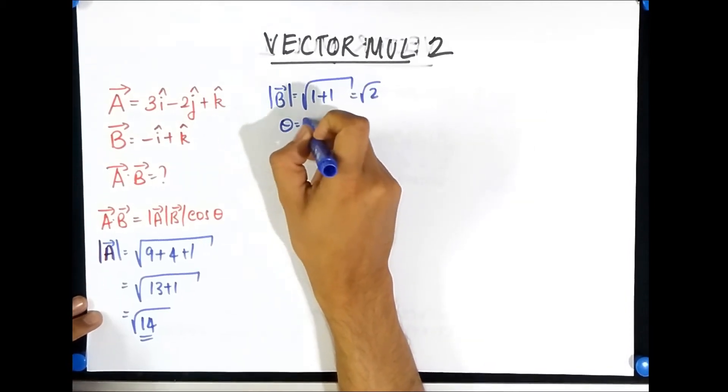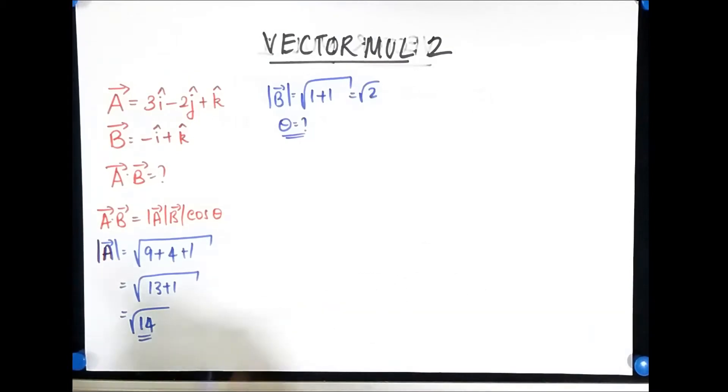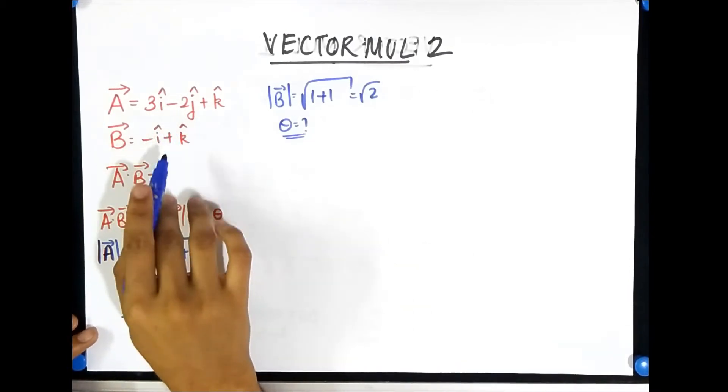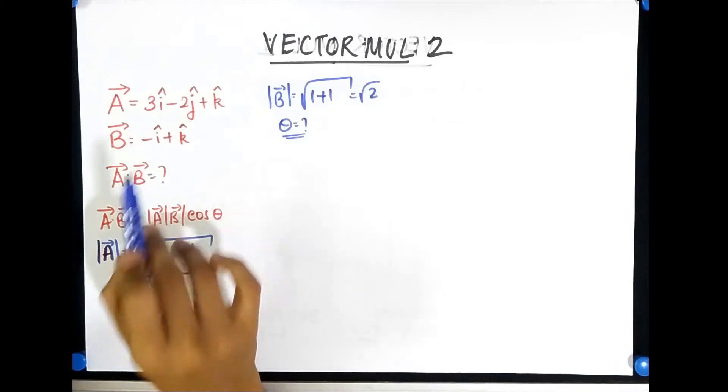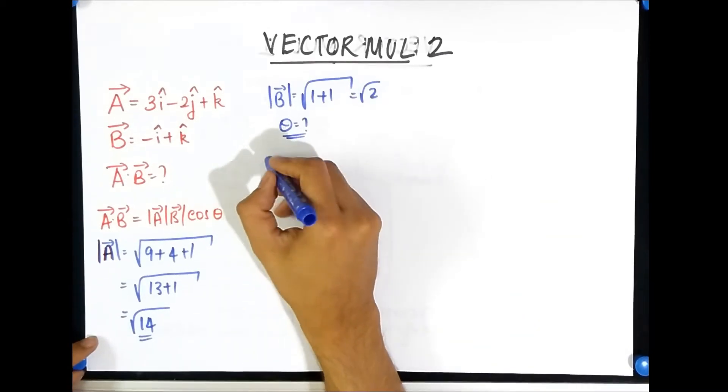But then you hit a wall because you don't know what theta is and so you say well you can't solve this but you can because the information now is given to you not in the polar format but in the Cartesian form so there must be some way to calculate this. What we are going to do is we are going to first find out what happens when you dot unit vectors.